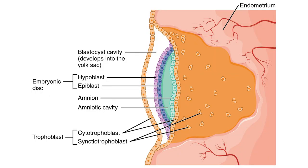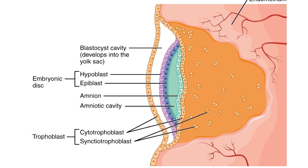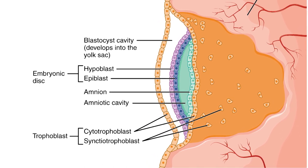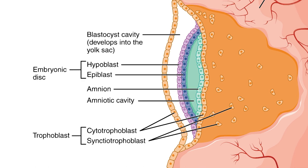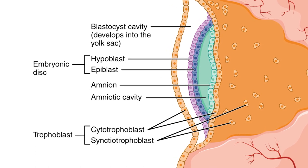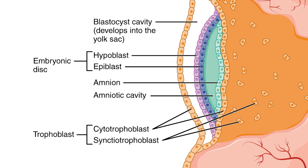Embryonic disc: the embryoblast forms an embryonic disc, which is a bilaminar disc of two layers — an upper layer called the epiblast, which is the primitive ectoderm, and a lower layer called the hypoblast, which is the primitive endoderm. The disc is stretched between what will become the amniotic cavity and the yolk sac.